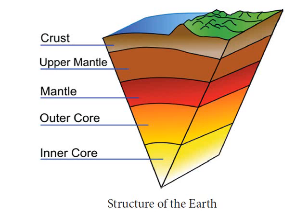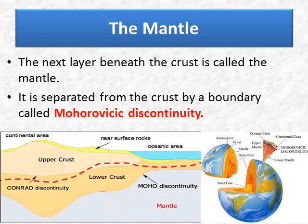What you see in the picture is the structure of the earth. We have learnt about the crust, which is made up of two parts: SIAL and SIMA. Next, we will go to the mantle, which has the upper mantle and lower mantle, then outer core and inner core.